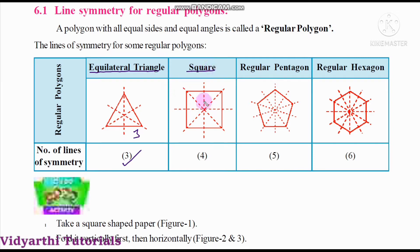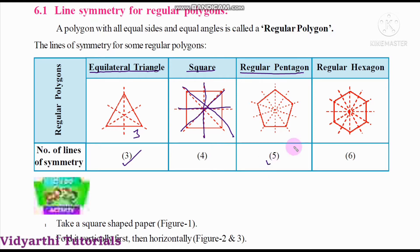Similarly, how many lines of symmetry can we draw for a square? One, two, three, four — so four lines of symmetry can be drawn for a square. Next, regular pentagon — five lines of symmetry. And regular hexagon — hexagon has six lines of symmetry.